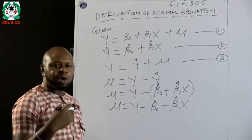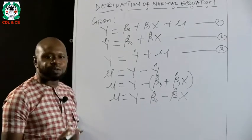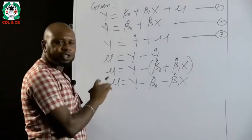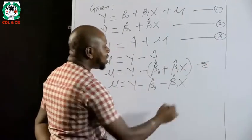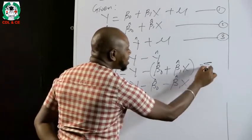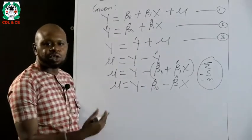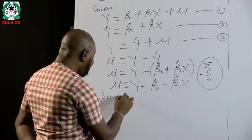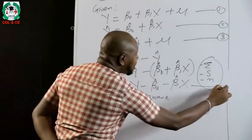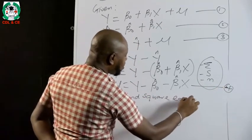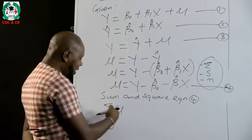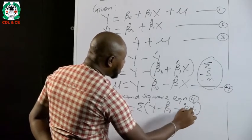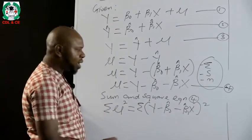To apply the OLS principle of minimizing the sum of squared residuals, we do three things: first, sum the residuals; second, square them; and third, minimize the result. Taking the first two together — sum and square — we get equation five: summation of U squared equals summation of (Y minus beta-naught estimate minus beta-1 estimate times X) raised to power 2.